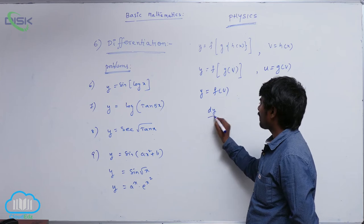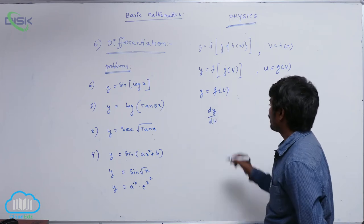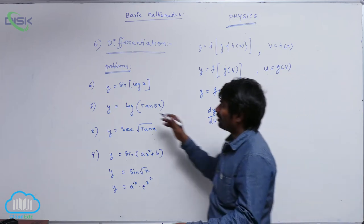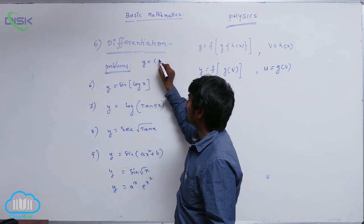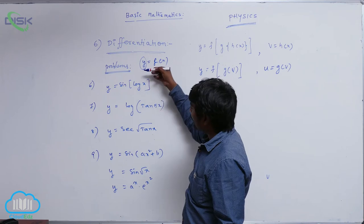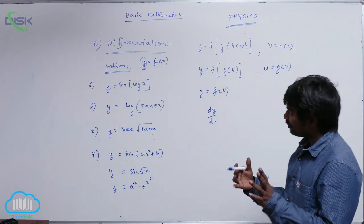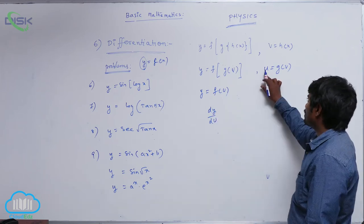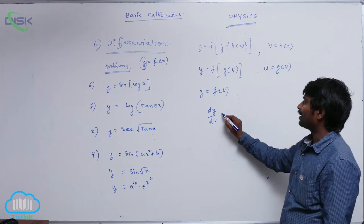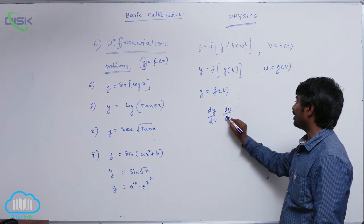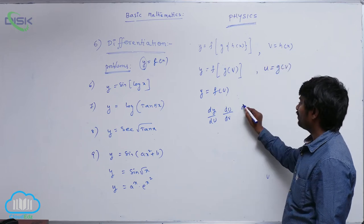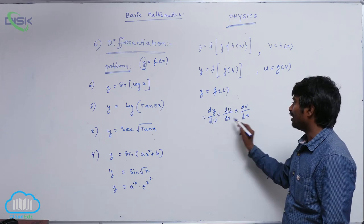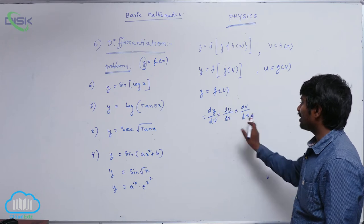So I can write dy by dx as dy by du, because y is a function of u. Then du by dv, since u is a function of v. And dv by dx, since v is a function of x. When you multiply these three, du cancels and dv cancels, and you get dy by dx — the differentiation of y with respect to x.